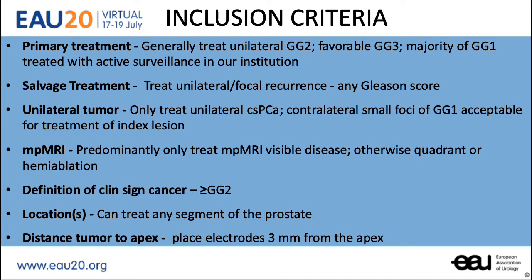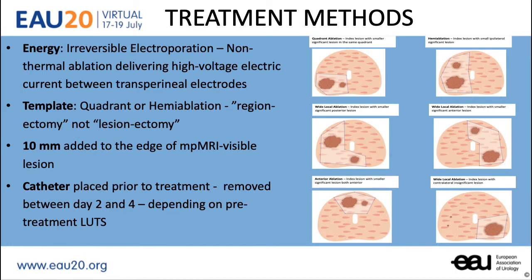We generally kept the ablation zone to greater than 3 mm from the apex, but as the electricity encompassed 5 mm, this indeed extended beyond the apex. We used irreversible electroporation, which is a non-thermal ablating energy using high voltage electrical current between transperineal electrodes. Generally, we treated a quadrant or hemiablation in a regionectomy, not lesionectomy, and there was a minimum of 10 mm to the edge of a multi-parametric visible lesion.